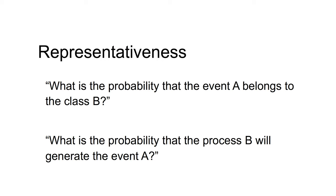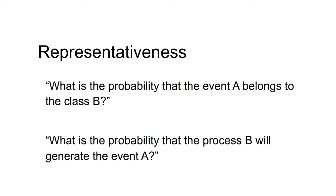Suppose you wish to estimate the probability that an event or person belongs to a certain class. What is the probability that event A belongs to class B? What is the probability that process B will generate event A? Under the representativeness heuristic, people evaluate probabilities by the degree to which A is similar or representative of B.